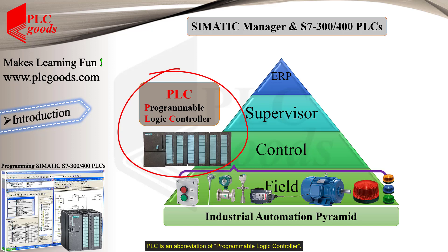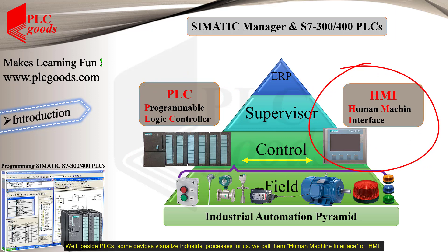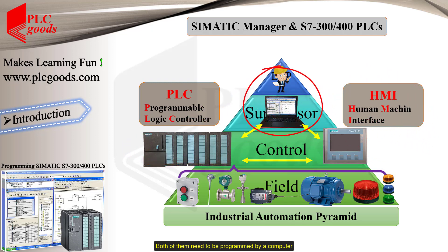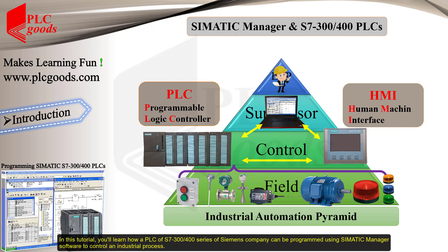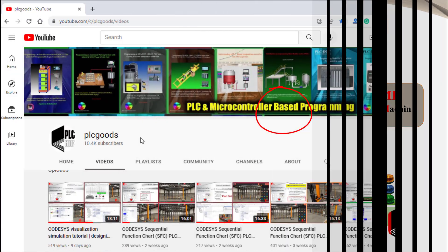Today's PLCs are often used to accomplish this task. PLC is an abbreviation of Programmable Logic Controller. These devices help us implement automatic controls in industries. Some devices visualize industrial processes for us — we call them Human Machine Interface or HMI. Both PLCs and HMIs need to be programmed by a computer. In this tutorial you'll learn how a PLC of the S7-300 or 400 series of Siemens can be programmed using SIMATIC Manager software to control an industrial process.